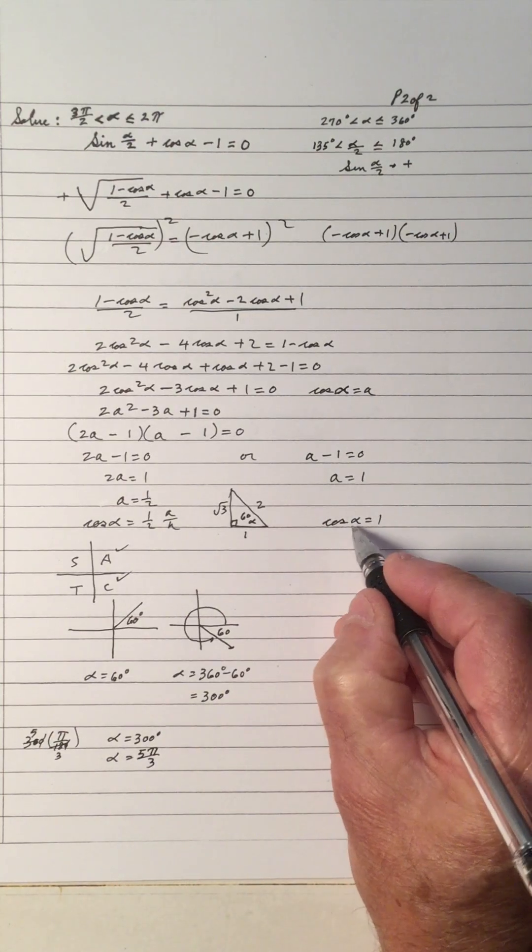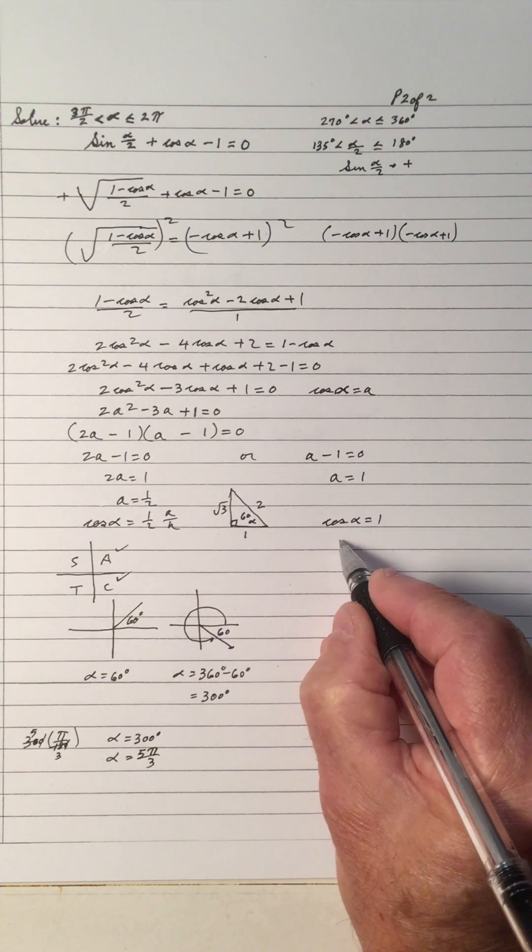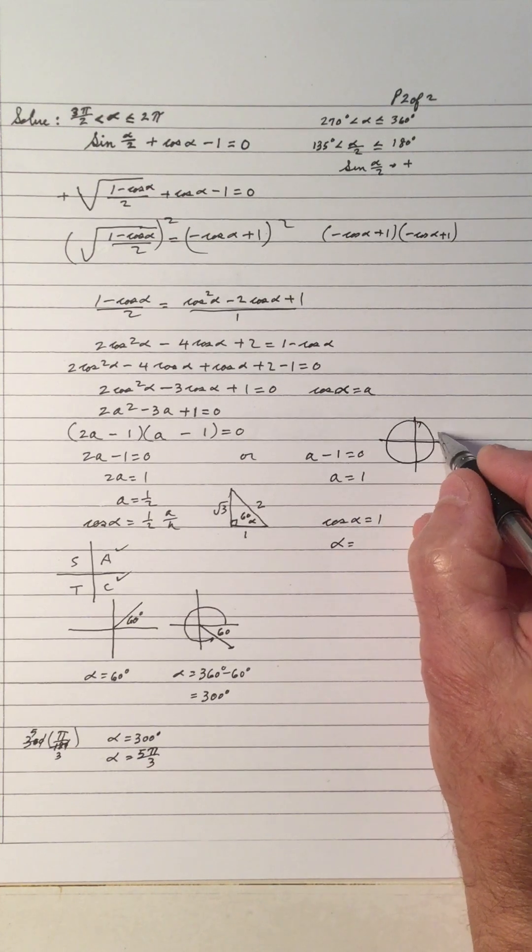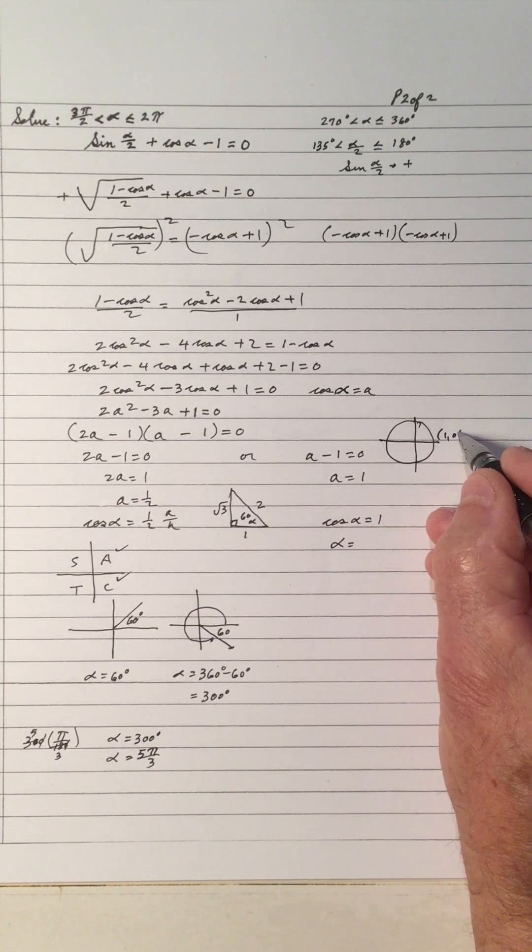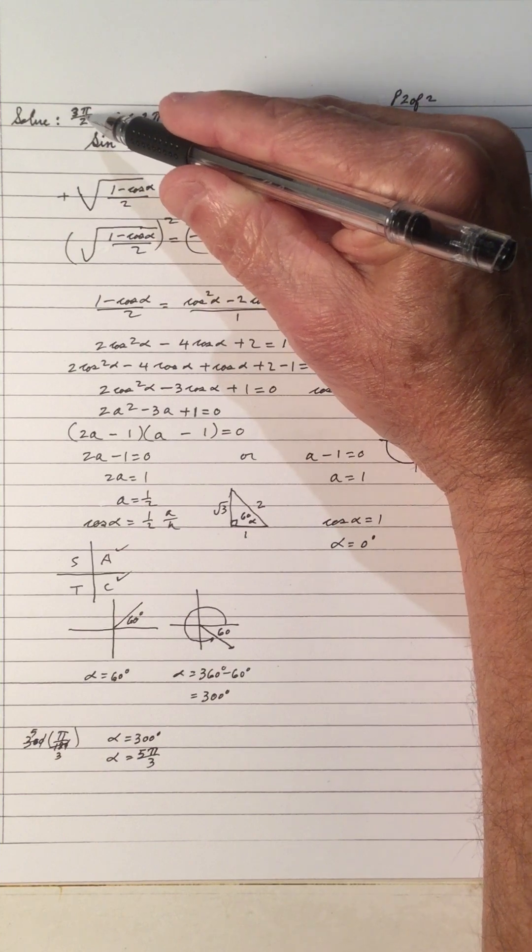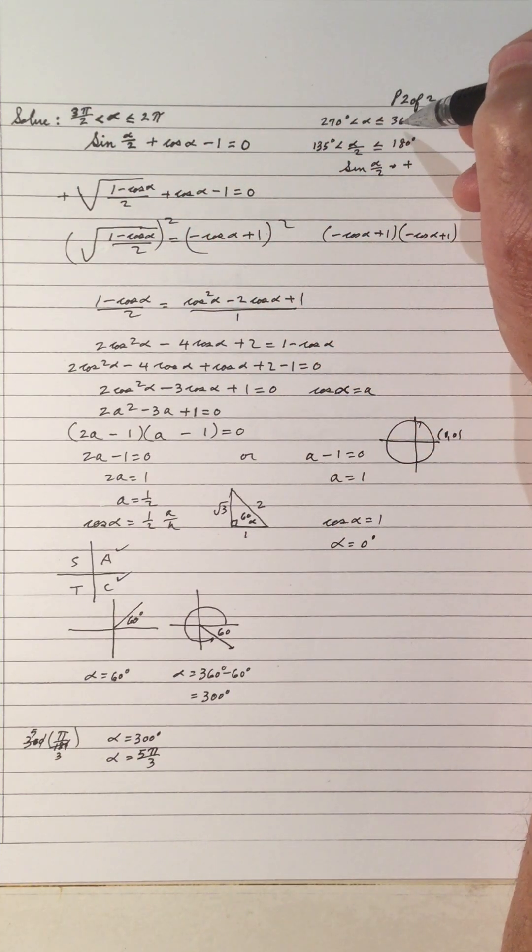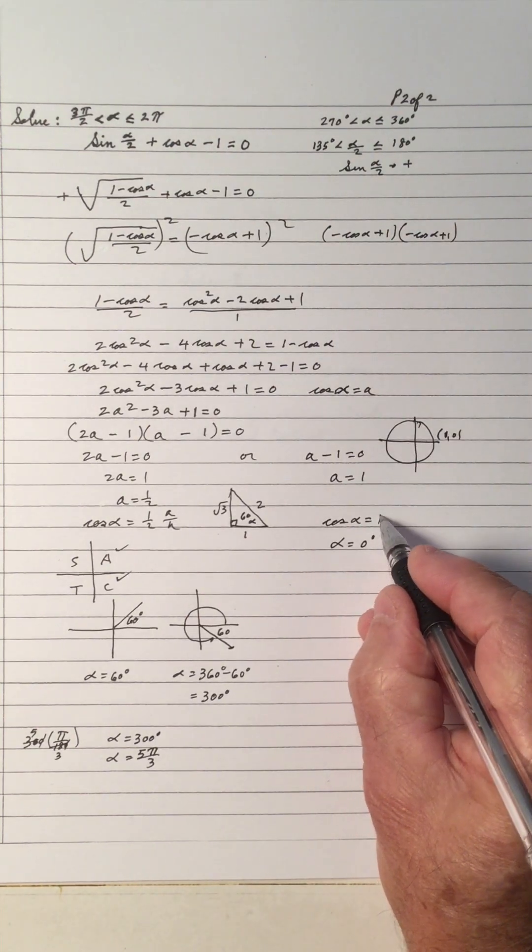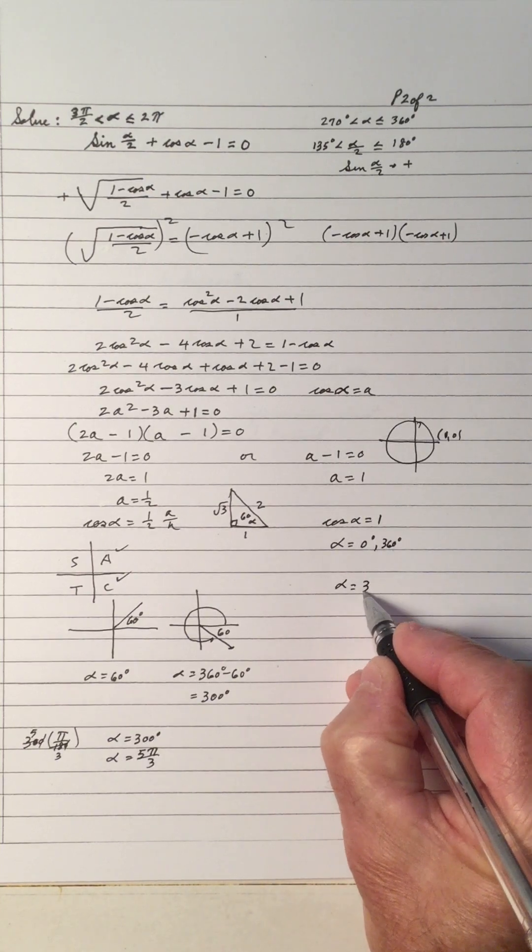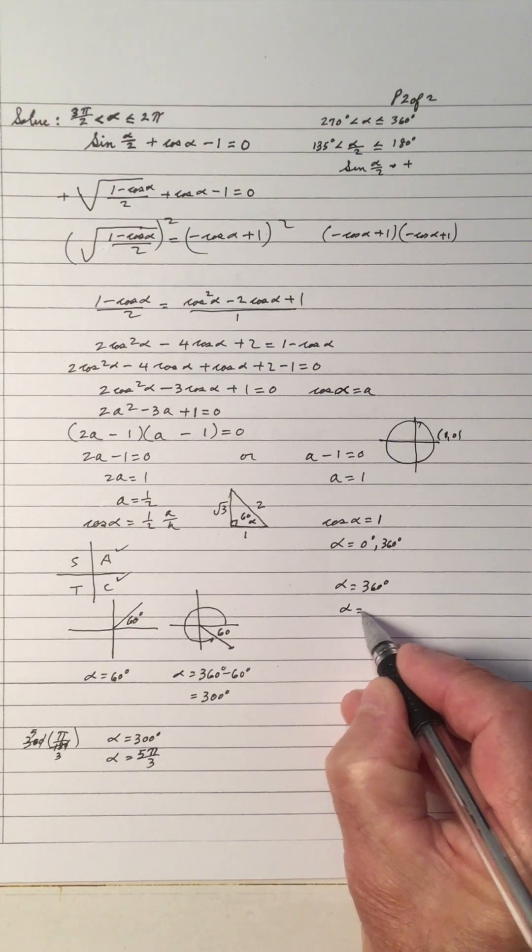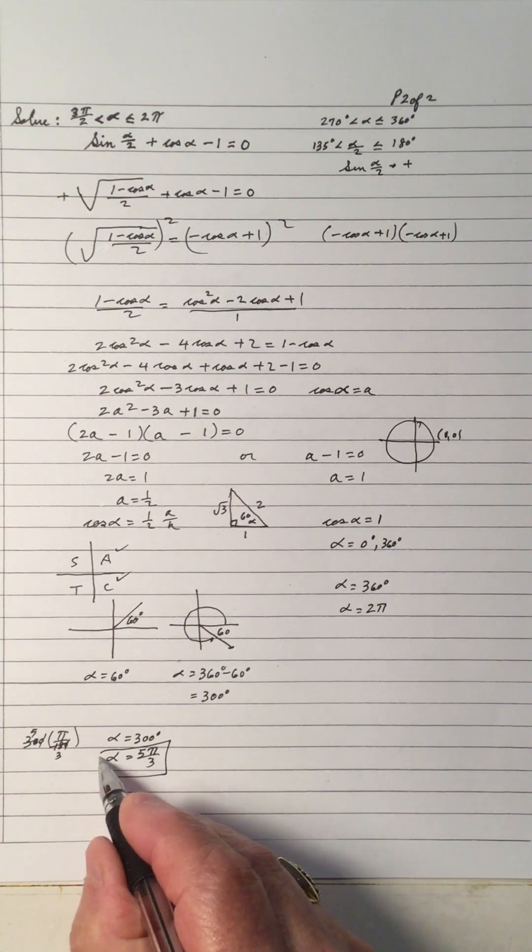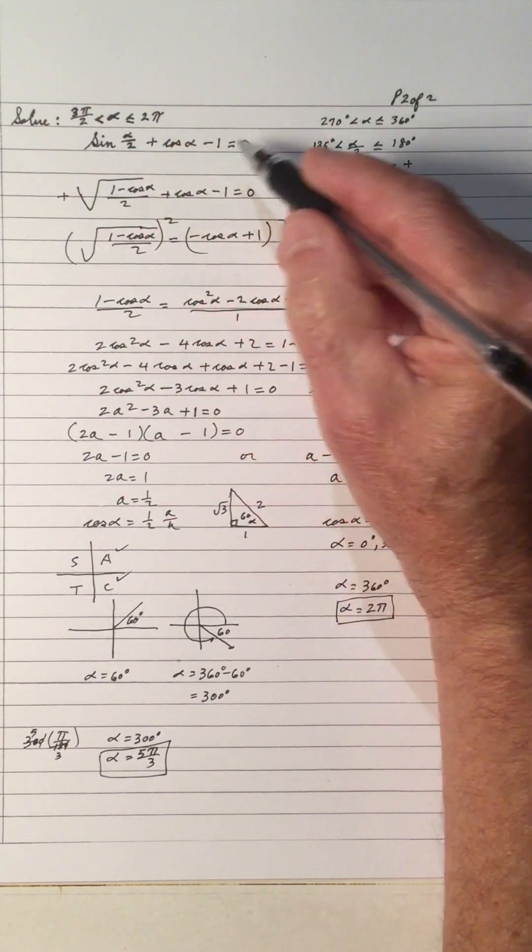We have to deal with this one: cos of α is 1. That means α is on the circle right here. So 1 is right here, so α is 0 degrees. But I look up here, I can't have 0. I've got to go between 270 and 360. So 0 is one answer, but if I rotate all the way around, I get 360. So that means α is 360 degrees, which means in radians, 360 is 2π. So the two answers are 5π/3 and 2π will satisfy this equation.